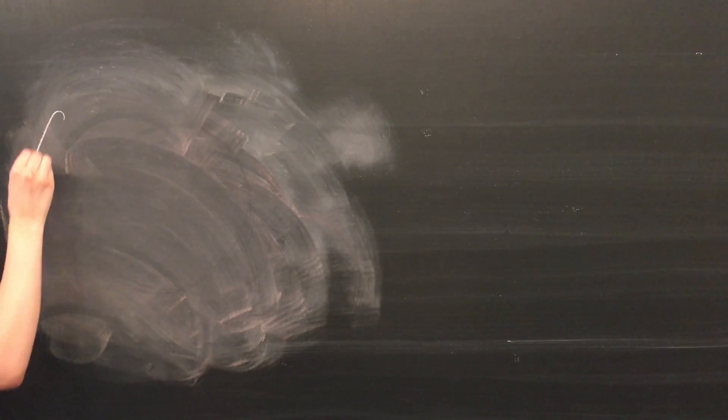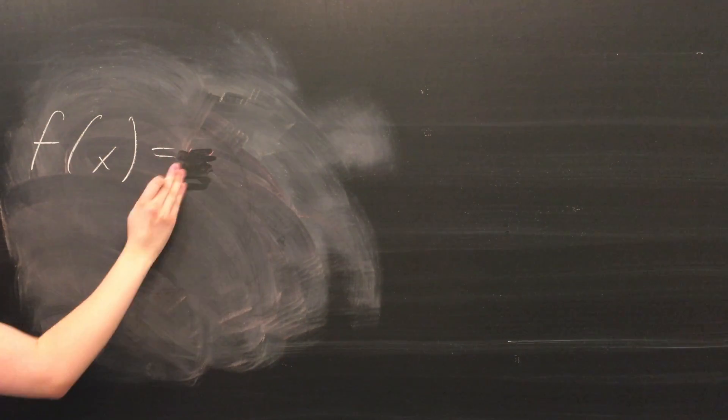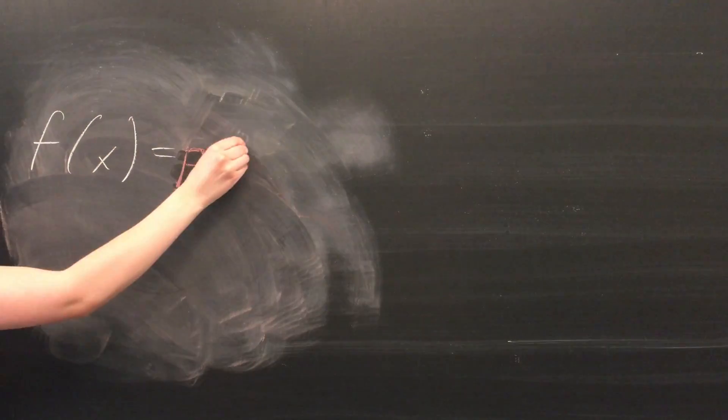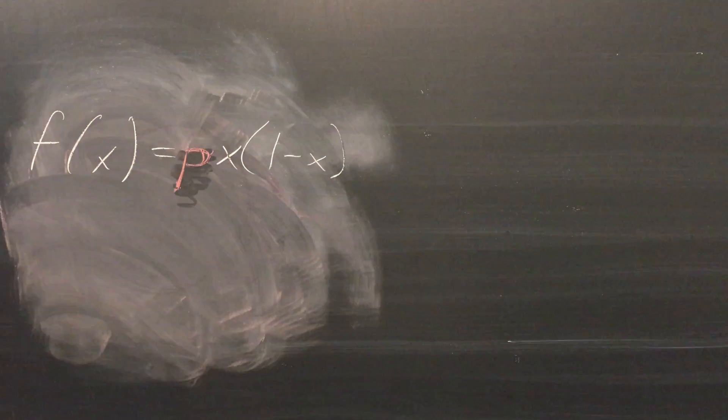A simple equation used to generate chaotic behavior is the following: f of x is equal to p x times quantity 1 minus x, where x takes on values between 0 and 1.